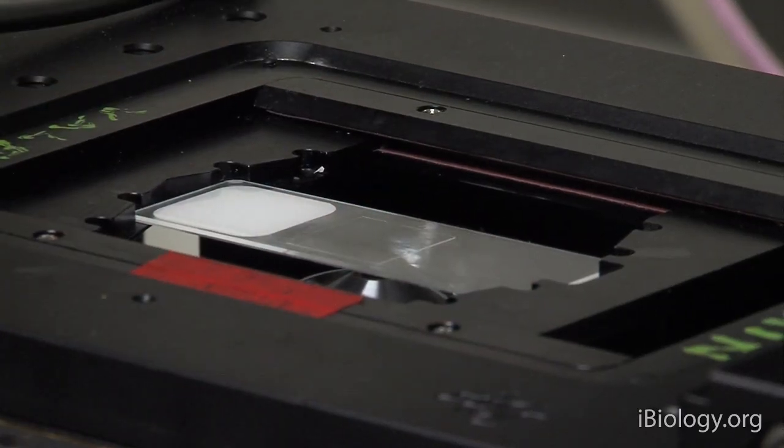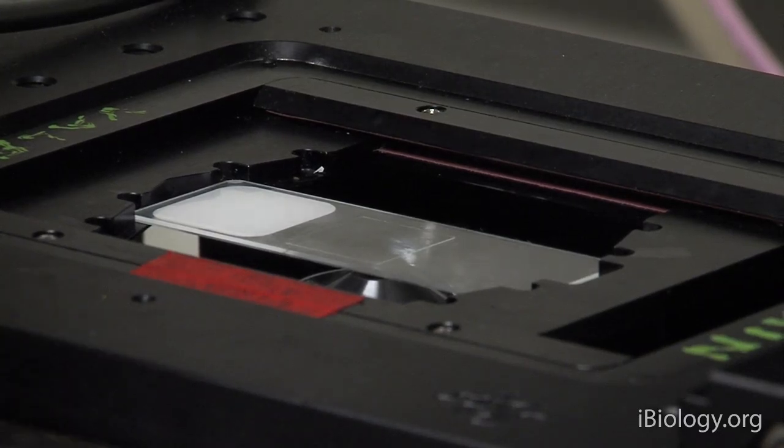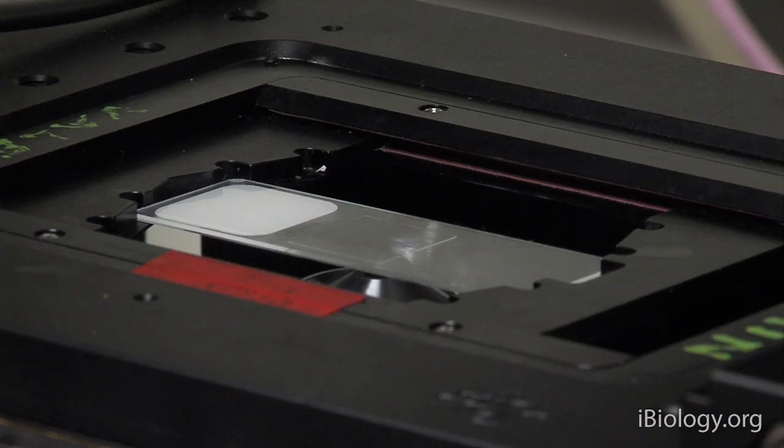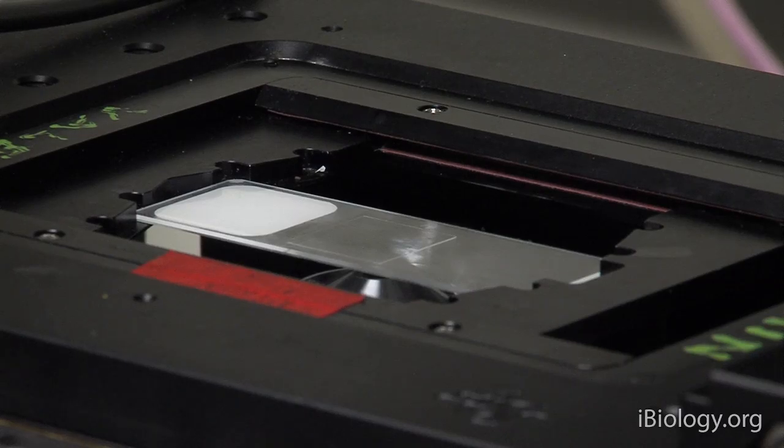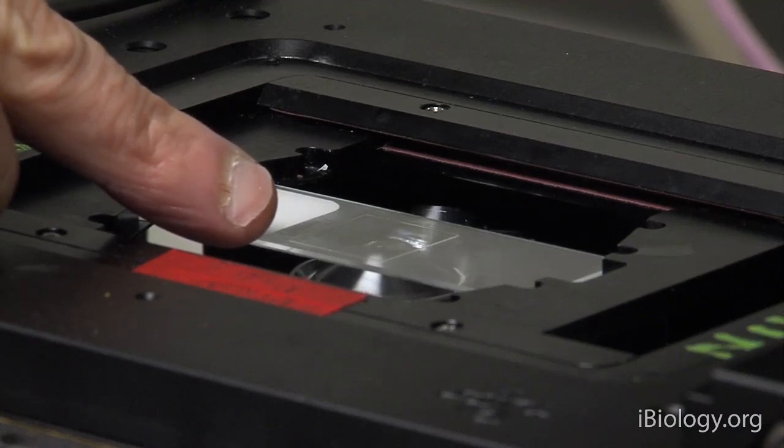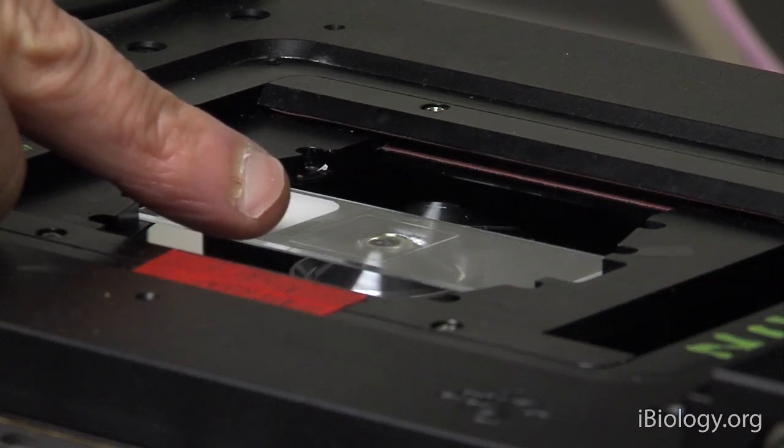Now, before I start focusing with the eyepiece, I want to get the objective lens to approximately the correct position, and I can do that with the coarse focusing knob. What I'm looking for is the moment when the oil comes in contact with the coverslip. At that moment, as I am now focusing up here, I'm watching for the moment when the contact is made and the oil spreads on the coverslip surface. There it goes, right there.